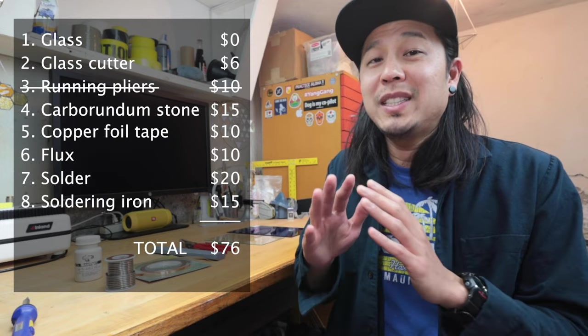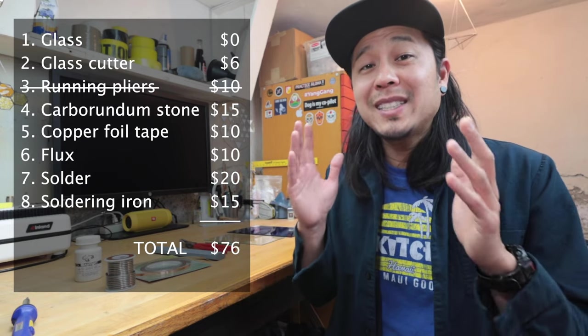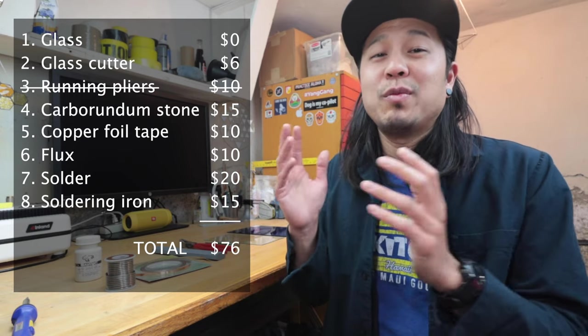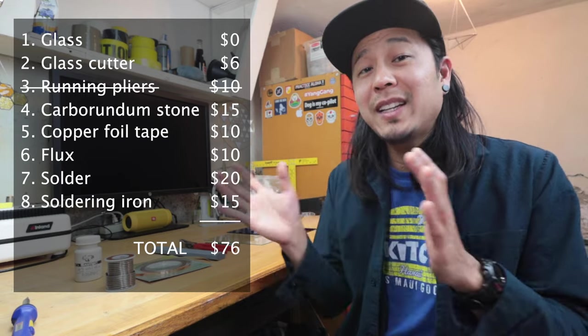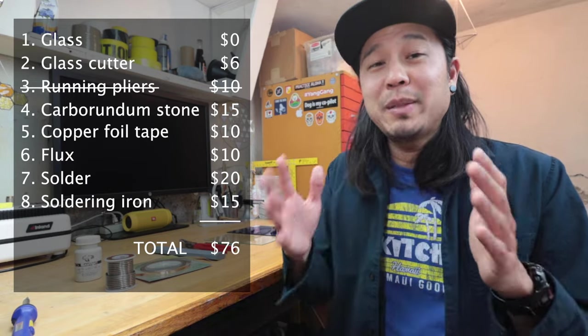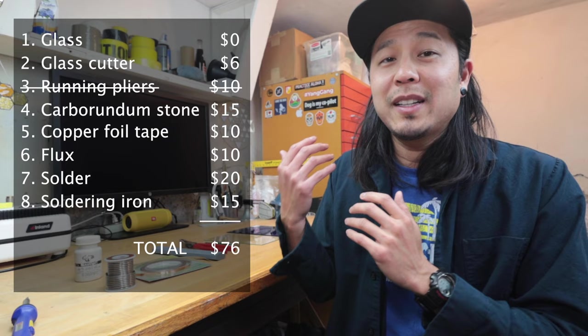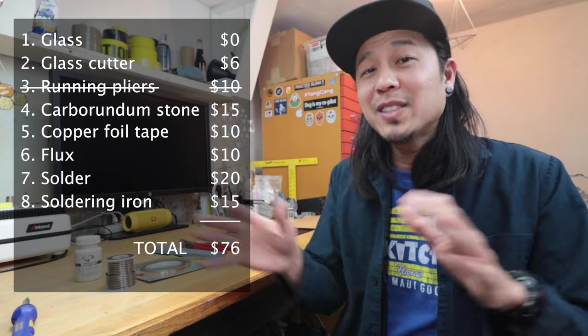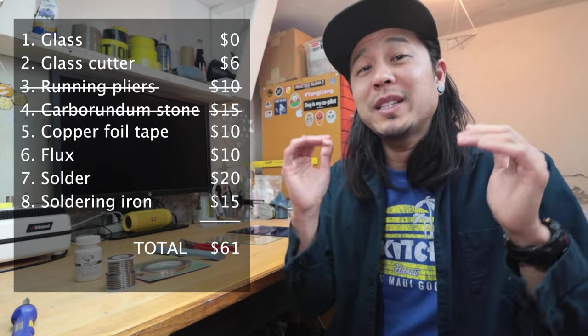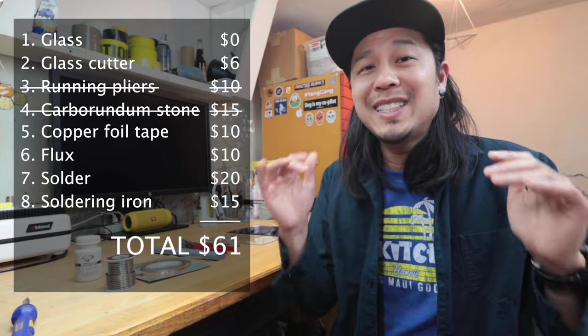Maybe the last thing you can get rid of is the carborundum stone. If you were to score the glass and then break it cleanly, then you don't need to use anything to grind it. I'm not saying that it's never going to happen. You can actually break your glass nice and clean, but it's rare that that happens. I'm not saying that you're going to need one all the time, but when you do need it, you're going to be happy that you have one. But depending on the project, again, you might be able to get away without having the carborundum stone to grind anything. You can knock off $25 for those two, which brings us to $61 total for the tools that you absolutely, absolutely need if you were to start stained glass.